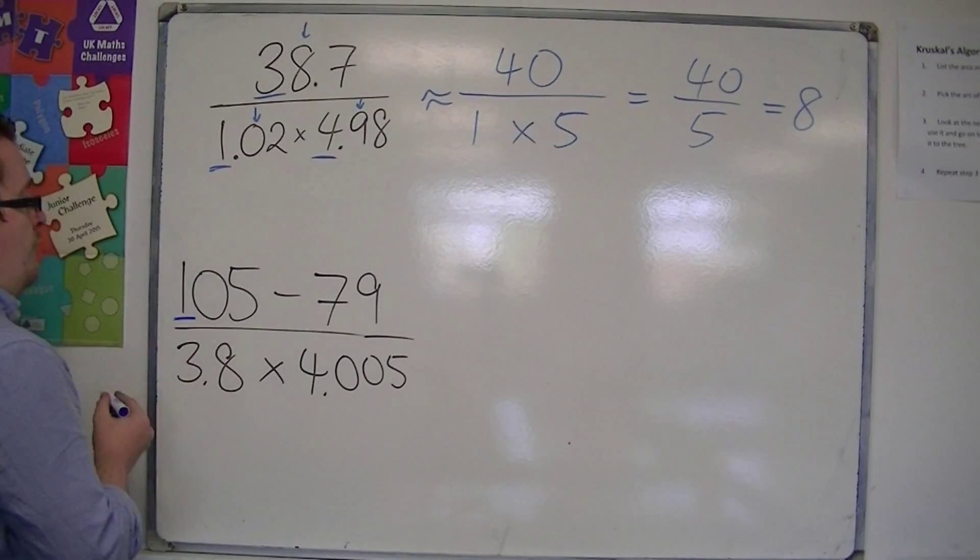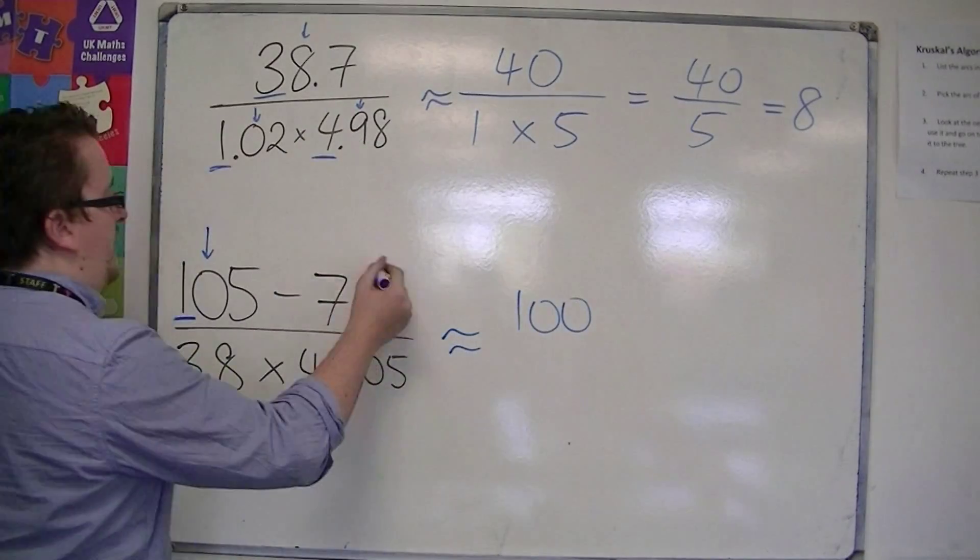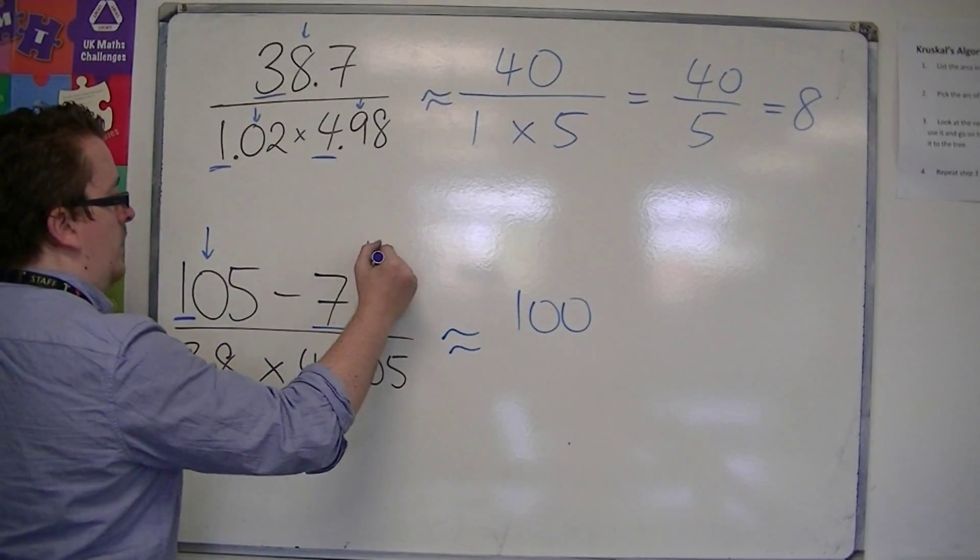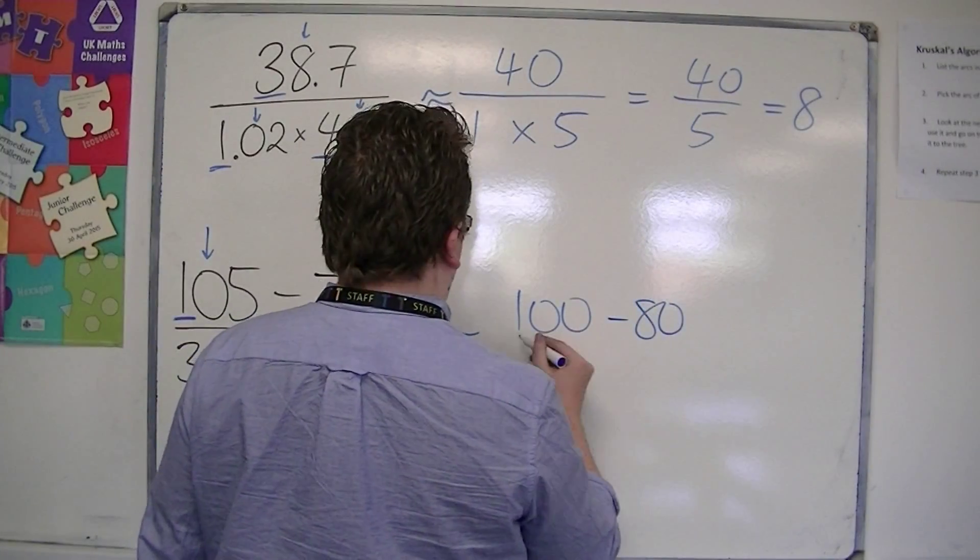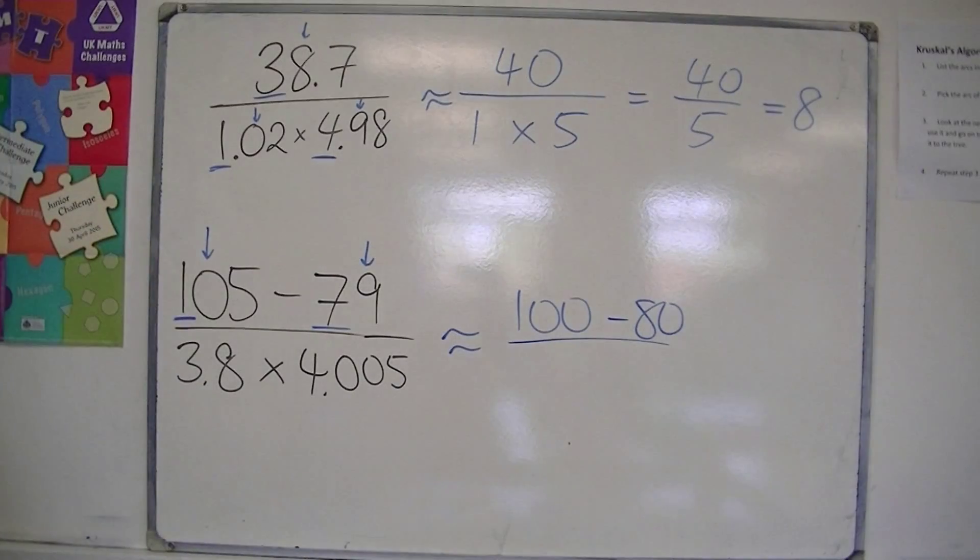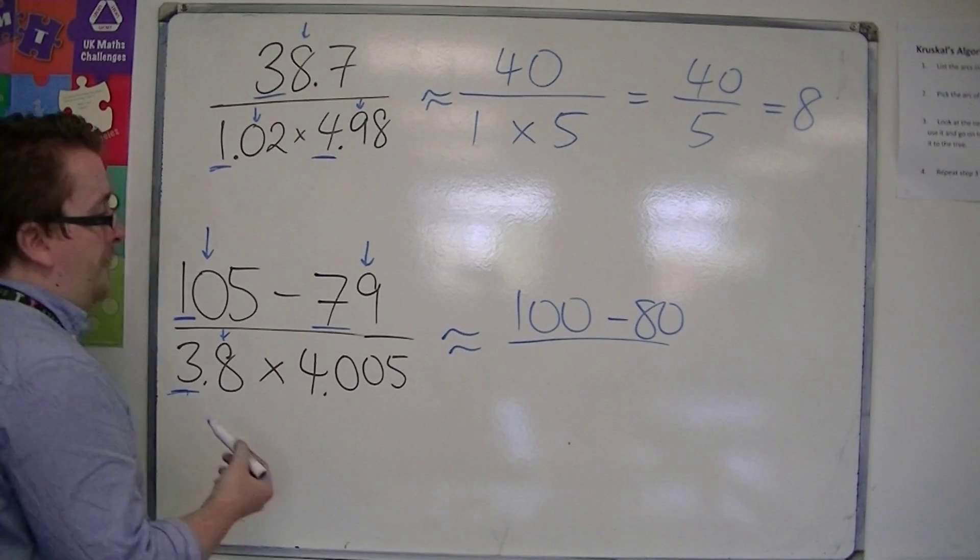So we're rounding each of these to one significant figure. The 105 would round to 100. The 79 would round to 80.